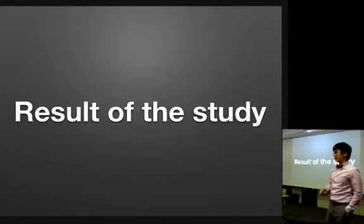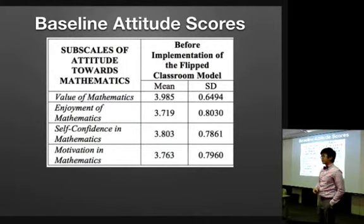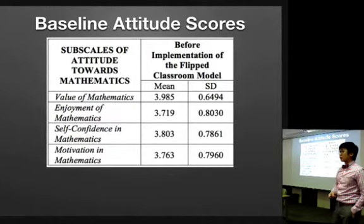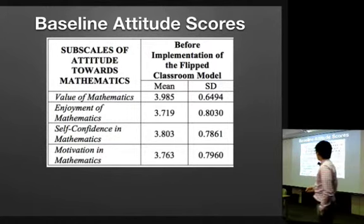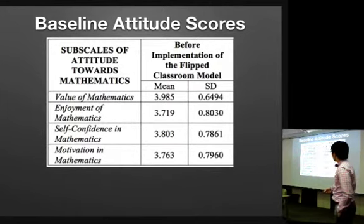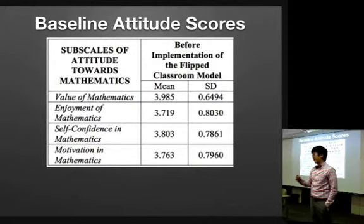And here's the result of my research after exposing my students for a year of flipped classroom model. Now, you can see here on my first set of tables, the mean score or ATMI mean score of my students prior to experiencing the flipped classroom. So, on the four subscales on the ATMI questionnaires that they answered, you will see that their ATMI mean is above 3.0,